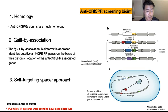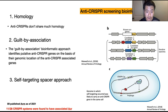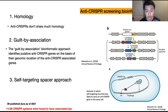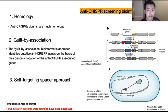Finally, the self-targeting spacer approach works on the idea that if CRISPR spacers self-target their own genome, activating the system would cause cell death. But if the cell is still alive, there must be some mechanism — possibly anti-CRISPRs — stopping the cell from self-destructing. Thus, it was postulated that any genome in which self-targeting occurred was likely to carry an anti-CRISPR gene.